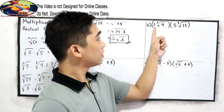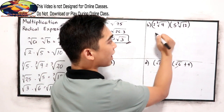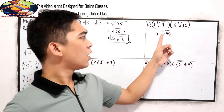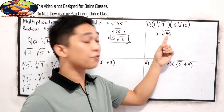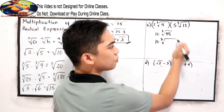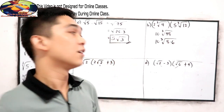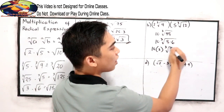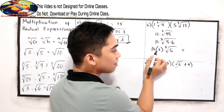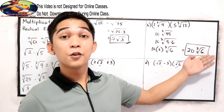Letter B: 2 cube root of 4 times 5 cube root of 12. Multiplying 2 times 5, that is 10; cube root of 4 times 12, which is 48. Our index is 3, so we need to find a factor of 48 where one factor is a perfect cube. So 10 cube root of 8 times 6 — because 8 is 2 times 2 times 2. So we have 10 times 2, cube root of 6, which gives us 20 cube root of 6. That would be our final answer.